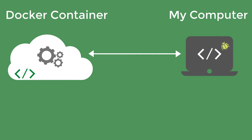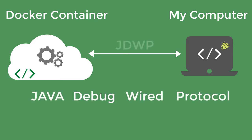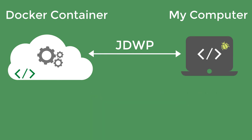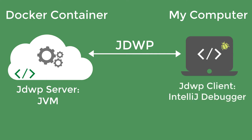Remote debugging is possible thanks to the Java Debug Wire Protocol, JDWP, which is the protocol used between the application and the debugger. As with many other protocols, we need a server listening for the connection of the client. The server is the JVM running the app, and the client is the debugger hosting the source code.